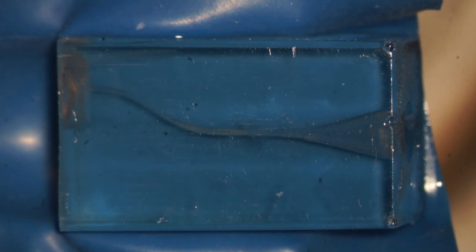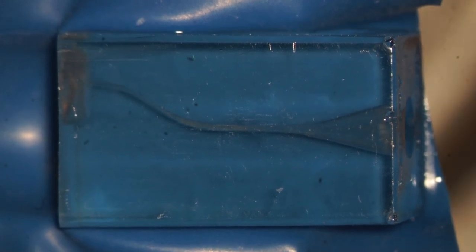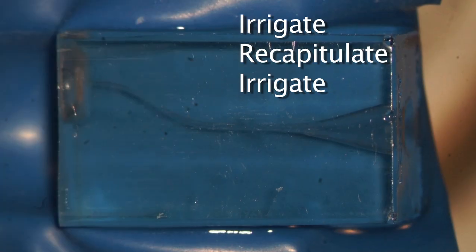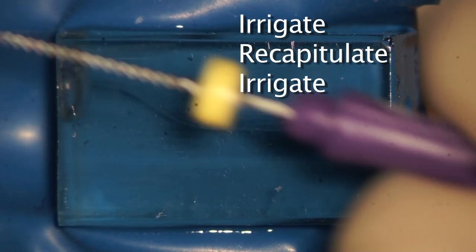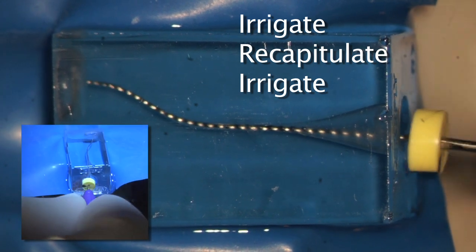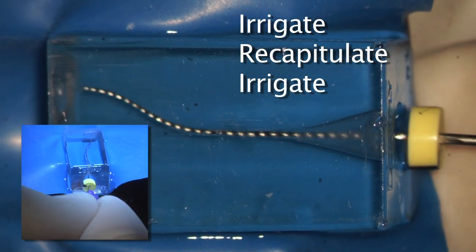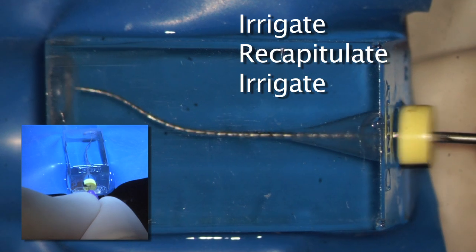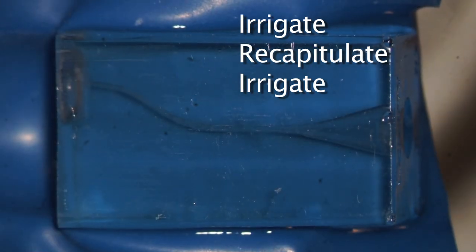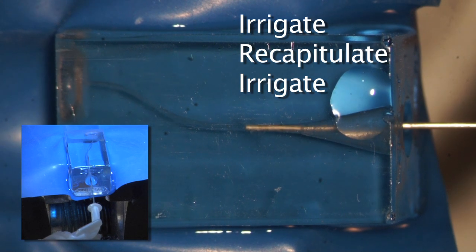Now remember, every time we remove a mechanical file, we really want to make sure that we irrigate and flush the canal out. We want to recapitulate with a small-sized hand file, in this case it's a ten hand file, and make sure the canal's patent. No debris should be accumulating towards the terminus, and then re-irrigate to liberate any residual debris that is inside the canal.